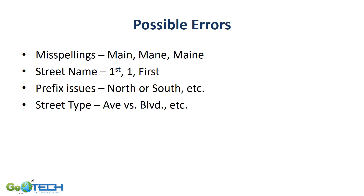Besides misspellings, there are also other problems that can happen within the geocoding. We actually had a police officer when we were doing crime mapping who put a little loop on the end of his N. Some of the students thought it was Main Street — instead of M-A-I-N, they were typing M-A-I-N-E. That particular town did have both a Main Street (M-A-I-N) and a Maine Street (M-A-I-N-E). So you have to be very careful with your spellings.